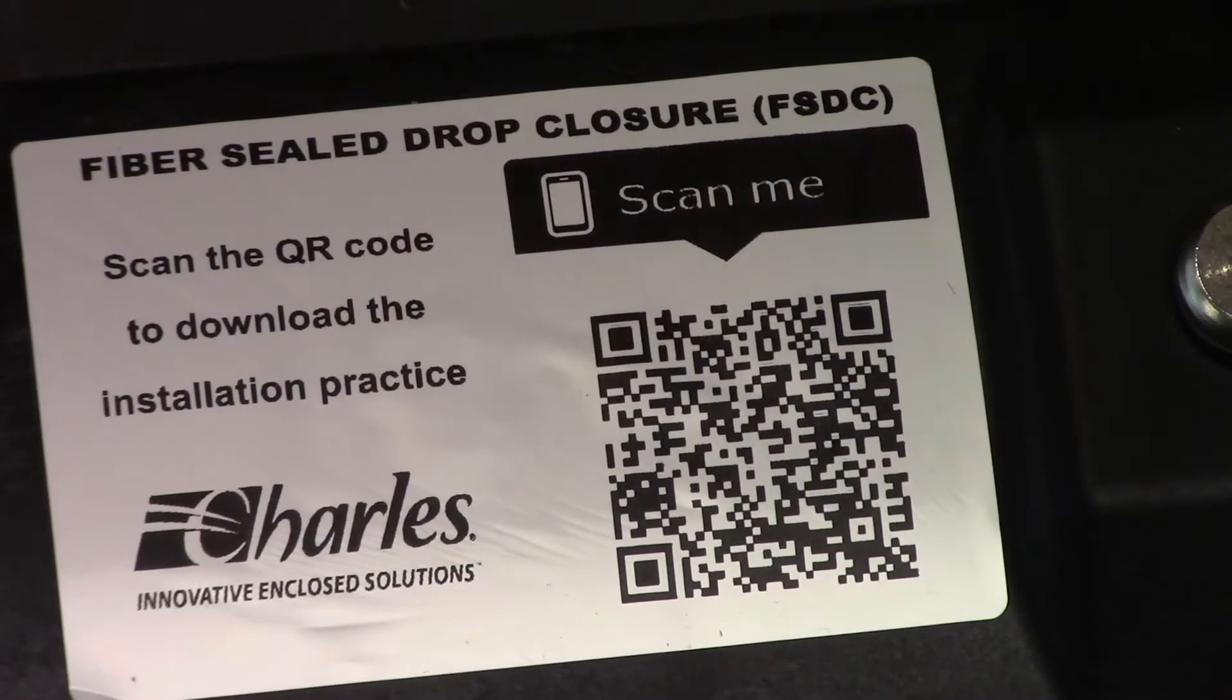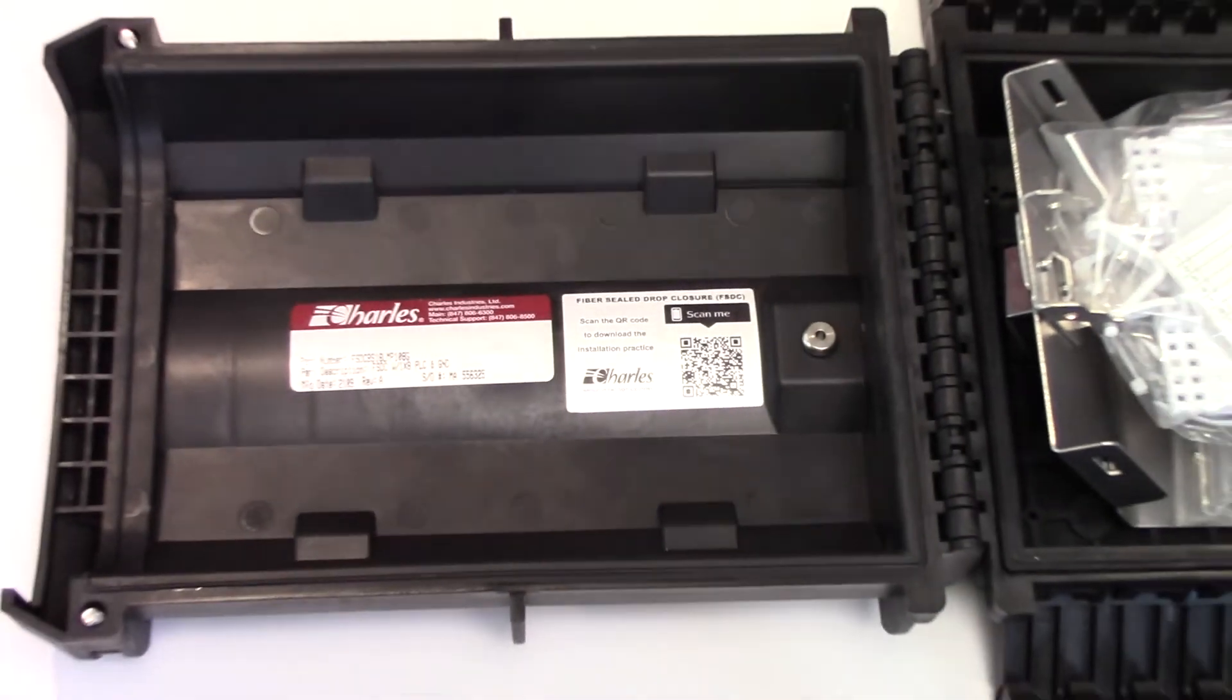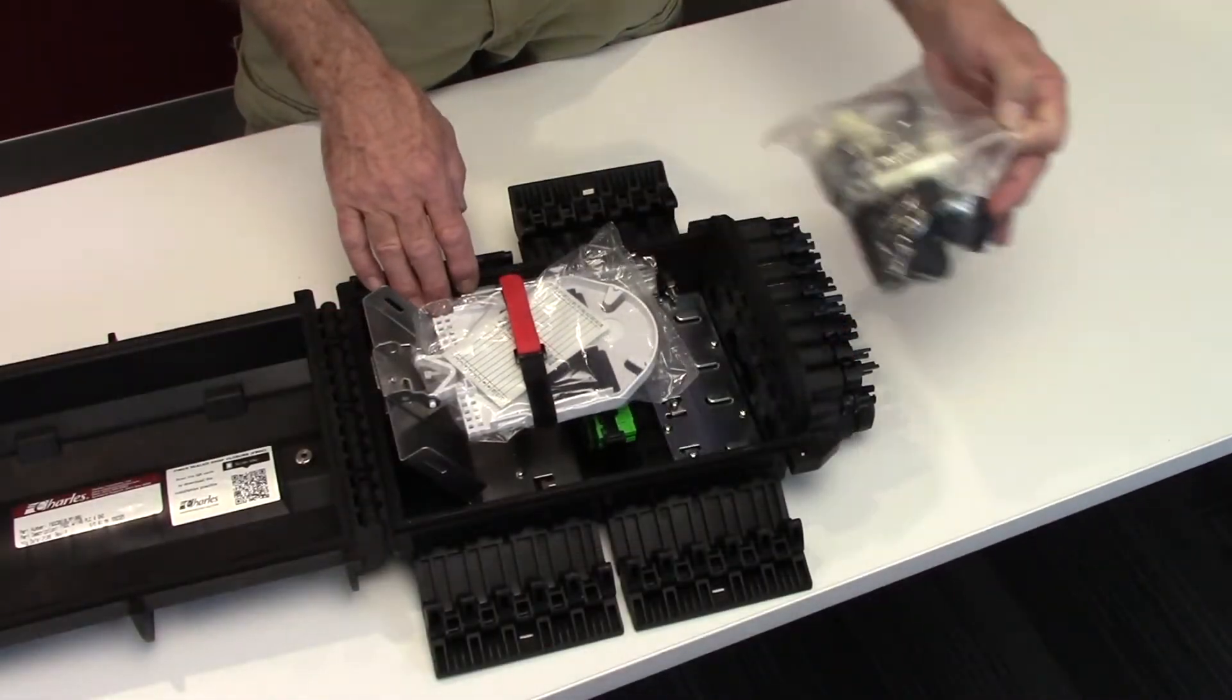Scan the QR code inside the closure lid to download the FSDC installation procedures. Remove the bag of accessories from the closure.